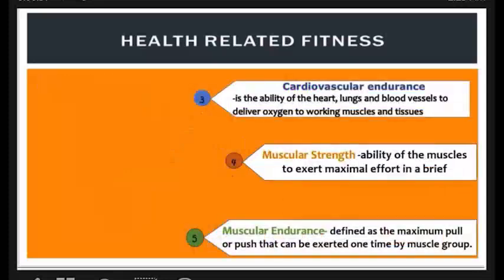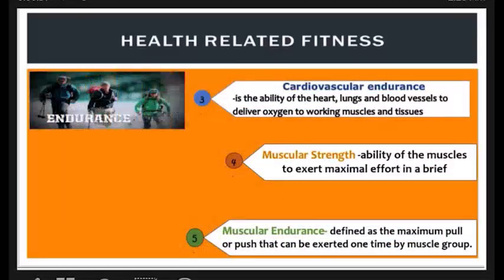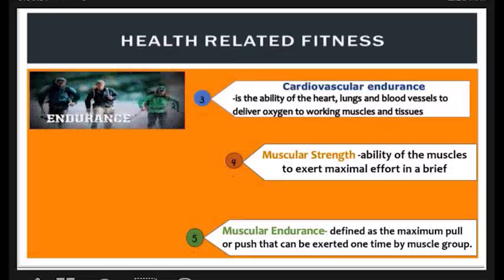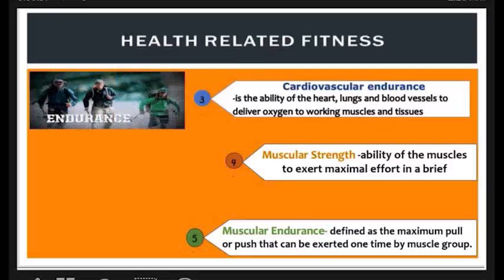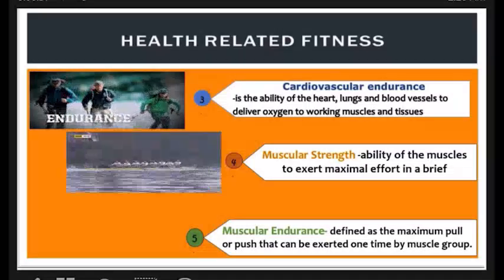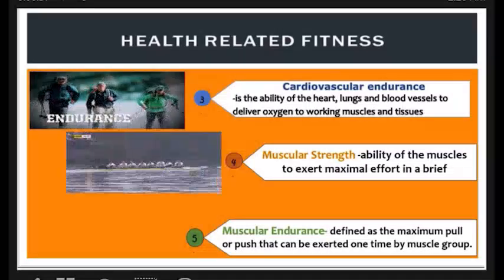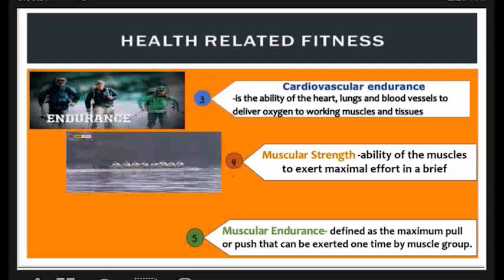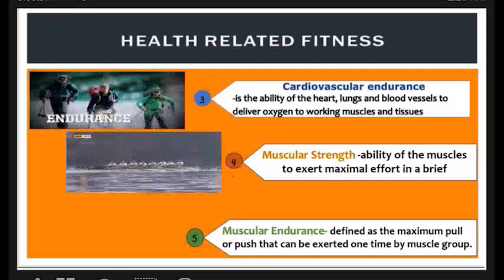3. Cardiovascular endurance is the ability of the heart, lungs, and blood vessels to deliver oxygen to working muscles and tissues. 4. Muscular strength is the ability of the muscles to exert maximal effort in a brief duration.